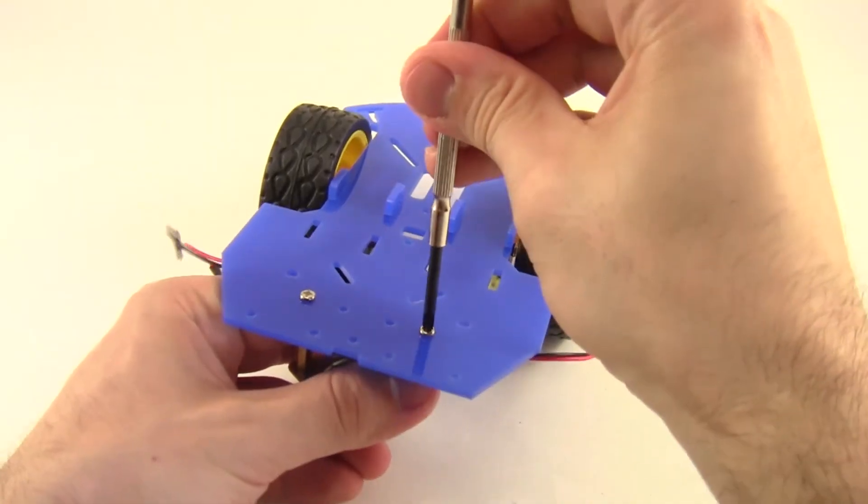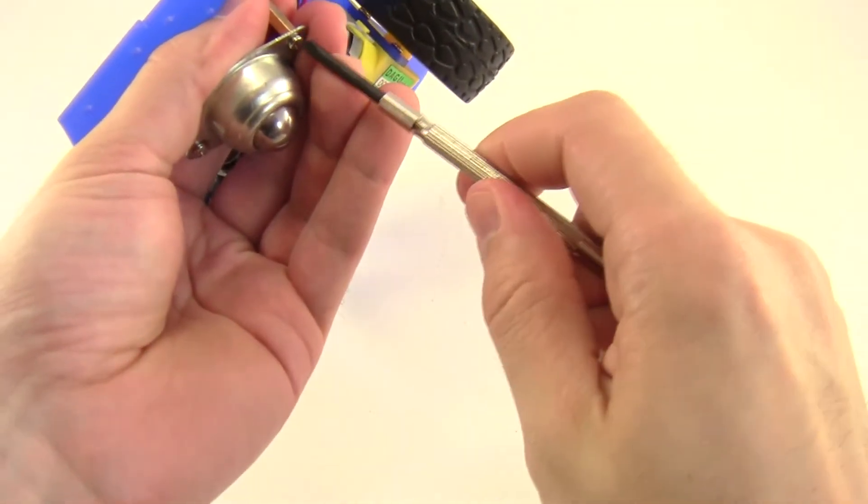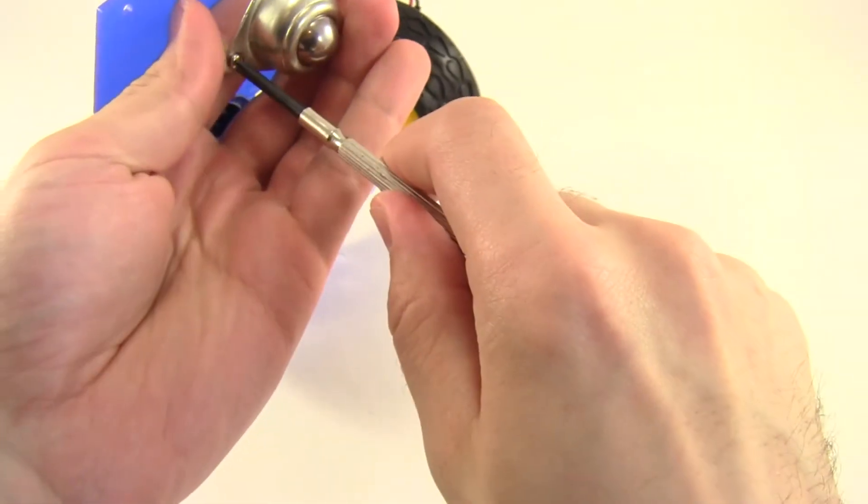Make sure you get all four screws nice and tight from the top and the bottom, and then your robot should be able to stand upright on all three wheels.